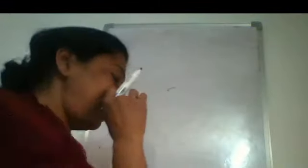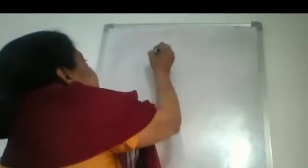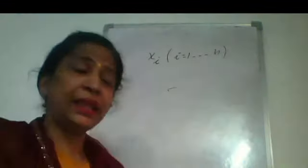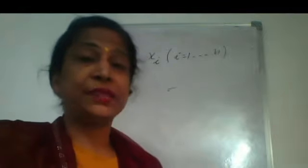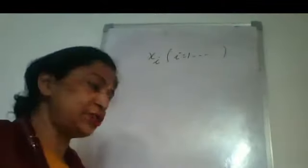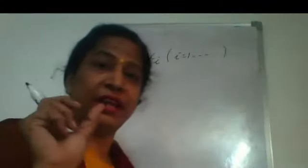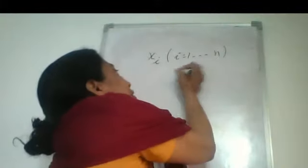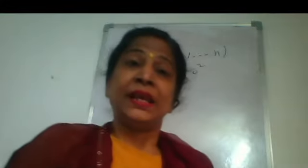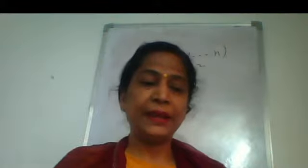Suppose we want to test for a random variable X, where Xi varies from i = 1 to n, drawn from a normal population with a specified variance. That specified variance is sigma naught square — a particular given value. Sigma is standard deviation and sigma square is variance.